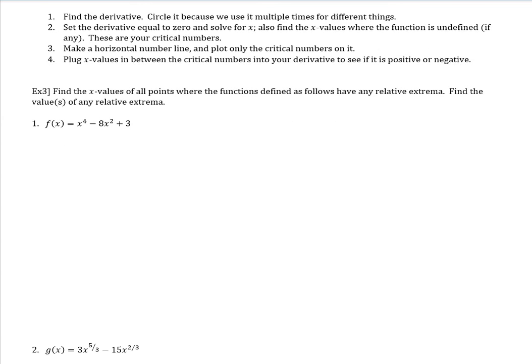So in these problems, let's find the x values of all points where the functions defined as follows have any relative extrema. Find the values of any relative extrema. So we're finding the x values and then we're finding the actual relative extrema. So our first step is to find the derivative. So f prime of x is equal to 4x cubed minus 16x. And then it's usually best to factor this derivative.